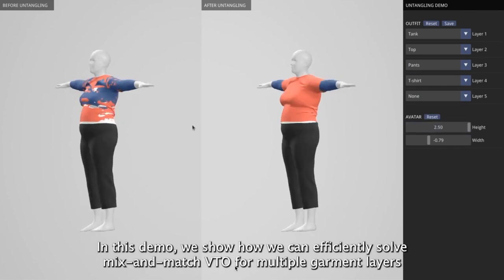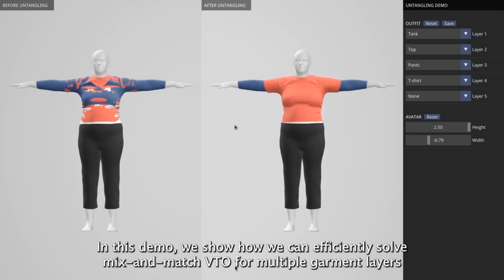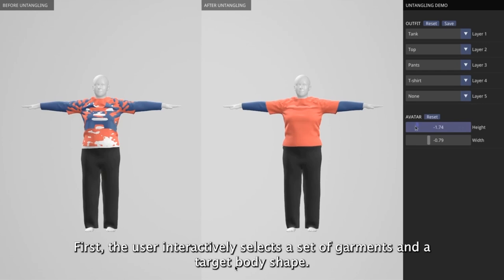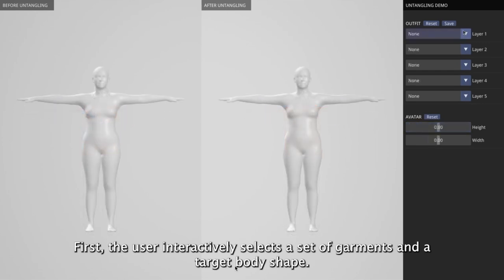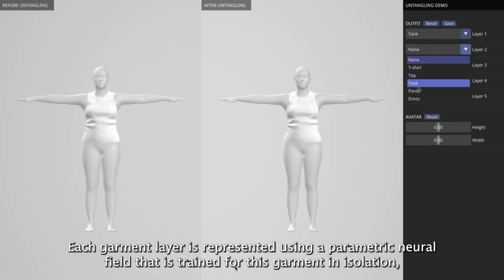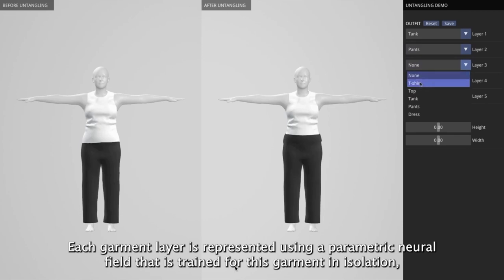Since it is a local operator, it generalizes to unseen garments. In this demo, we show how we can efficiently solve mix and match virtual try-on for multiple garment layers. First, the user interactively selects a set of garments and a target body shape.